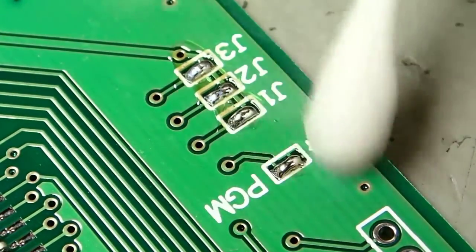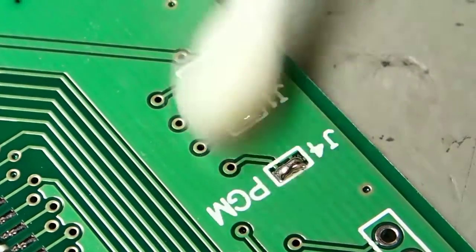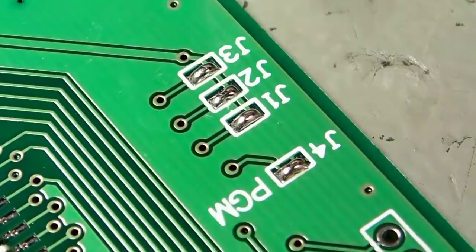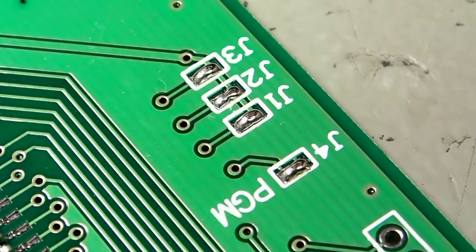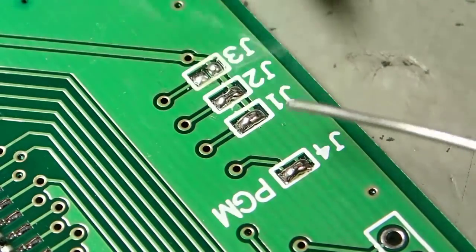When you're finished, cotton bud and acetone, clean up all that nasty flux so that you can see what's going on. Particularly when you're removing the jumpers, then you can inspect between the pads and make sure that there's no solder there.